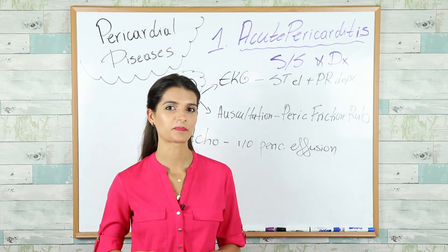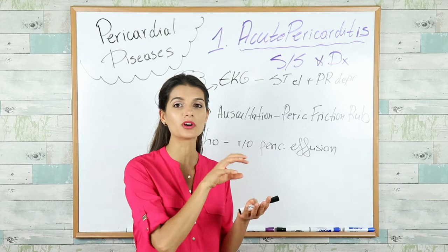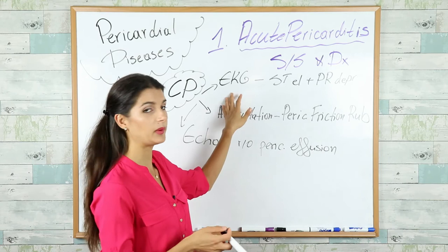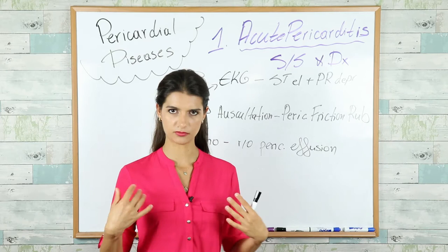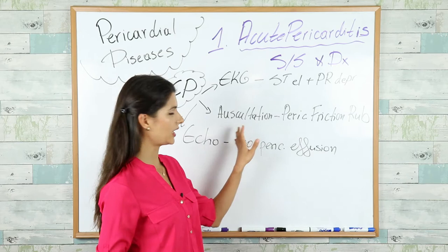When I say diffuse, I mean in all leads. If it were MI, the changes would be focal — but here they're diffuse in all leads. In the vignette, they may tell you the patient's chest pain gets better when sitting upright and worse when lying down — another clue for acute pericarditis. The hallmark on auscultation is the pericardial friction rub.